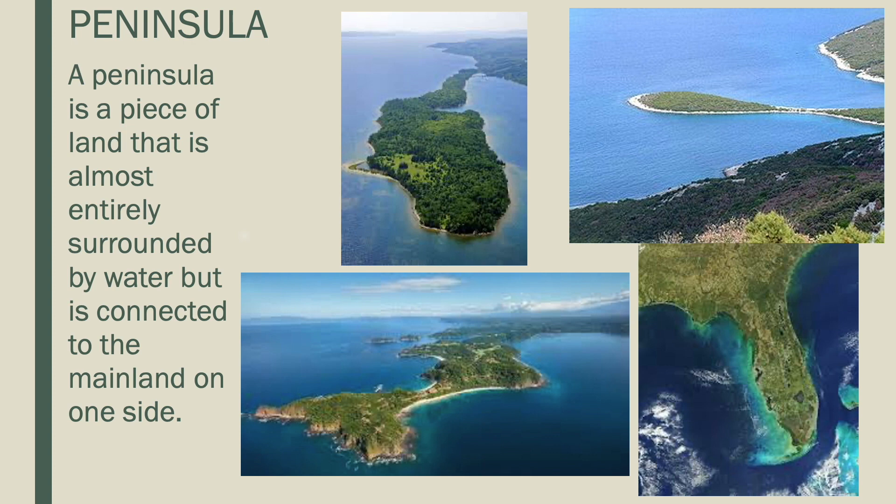Another type of landform is a peninsula. A peninsula is a piece of land that is almost entirely surrounded by water, but is connected to the mainland on one side.